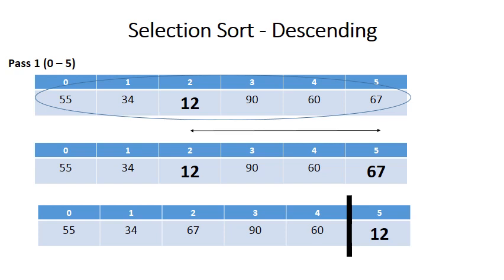then swaps it with the element at the end. So the 12 and the 67 swaps. And if you apply this algorithm, it will obviously be sorting the list in descending order. So you will be putting the smaller elements at the back continuously.